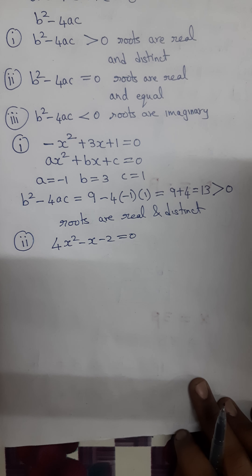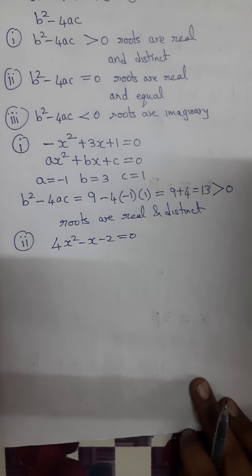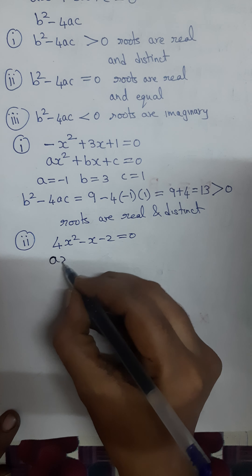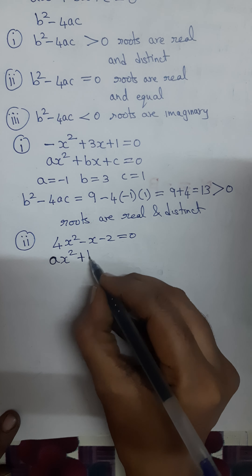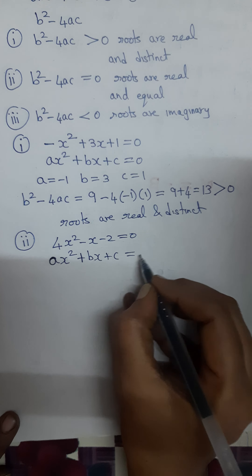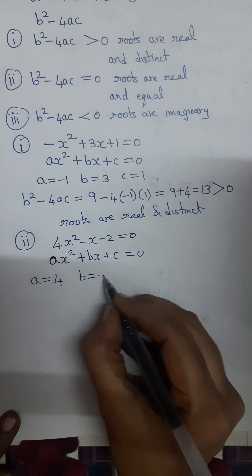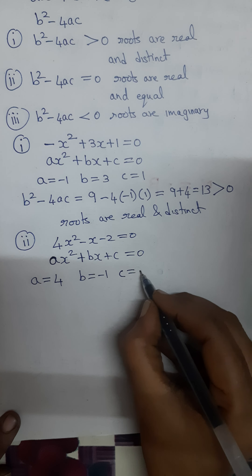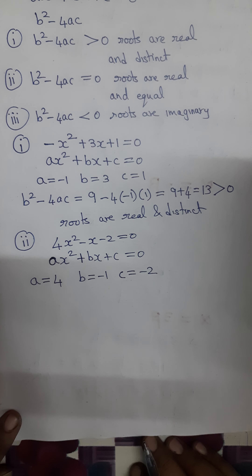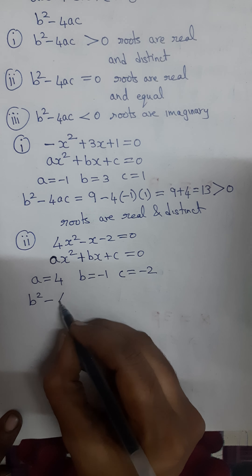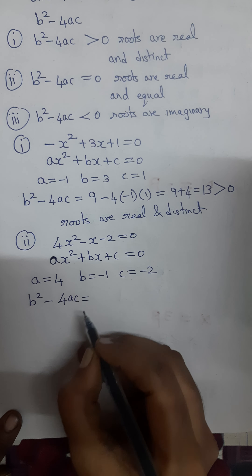The second subdivision: 4x² - x - 2 = 0. We have to find the nature of the roots for this equation. Comparing with the general form ax² + bx + c = 0, we get a = 4, b = -1, and c = -2. Now we calculate b² - 4ac.